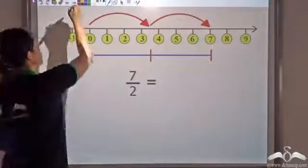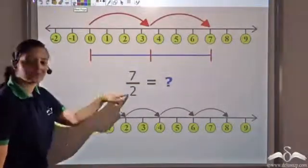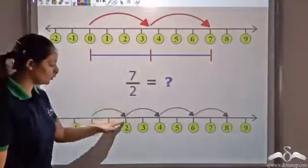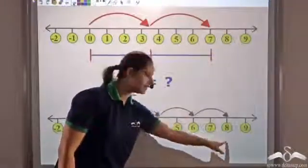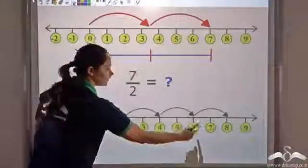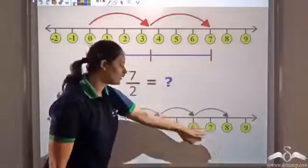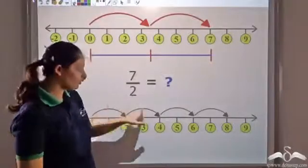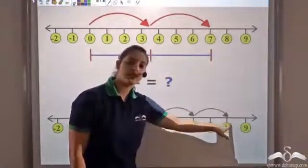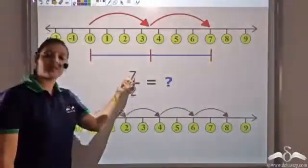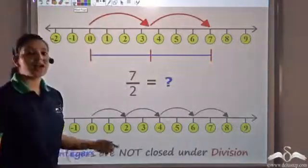Using the second approach — how many twos actually fit into seven — I start from zero and jump in intervals of two. Three twos give me six, but the fourth jump takes me to eight, missing seven entirely. So the twos do not fit evenly into seven. The result must be more than three but less than four. When I divide these two integers, the result cannot be represented by an integer.